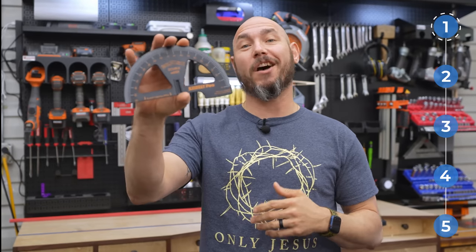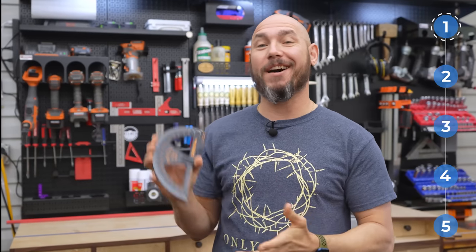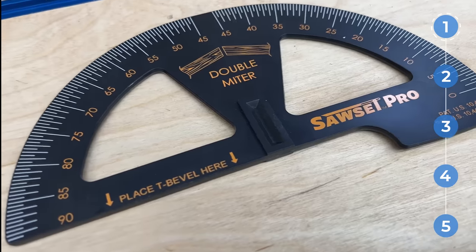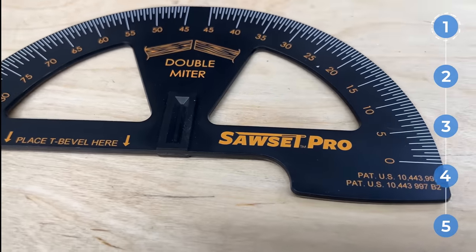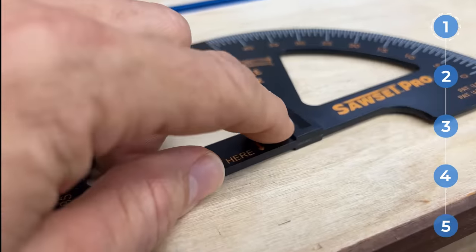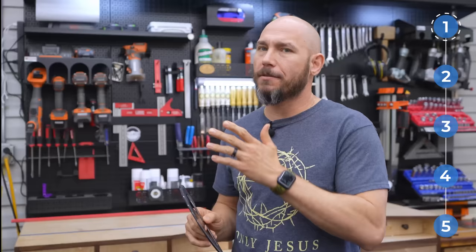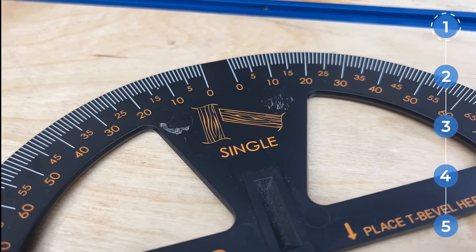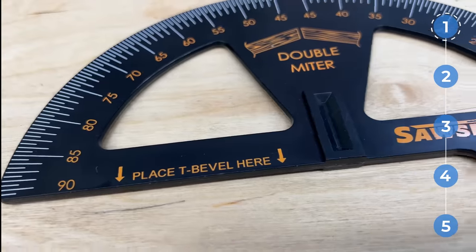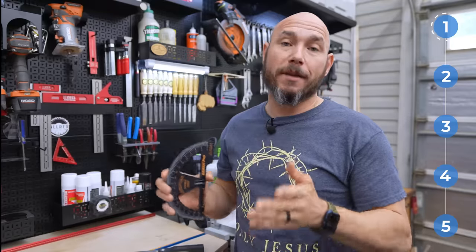Number one on the list is the Sawset Pro. This thing is awesome if you do any type of miter cuts. It looks like the old school protractors we used to use way back in grade school, but it has unique features that make setting your saw up for the cut super easy. On one side of the Sawset Pro you'll see it says single, and on the opposite side it shows double miter, and there's a reason for that. Let me show you.